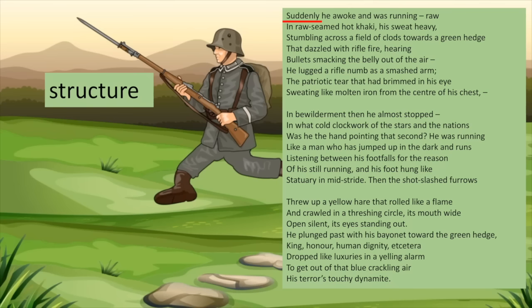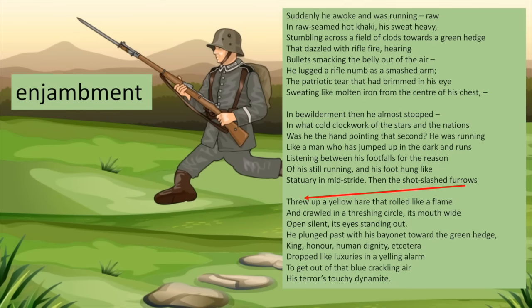Hughes employs enjambment to portray the chaos of war. Enjambment is the continuation of a sentence beyond the end of a line. We see this throughout the poem, even between stanzas — for example: 'then the shot slashed furrows through up a yellow hare.' The enjambment creates a disjointed, disordered effect on the reader. Just like the soldier, the reader struggles to make sense of the chaos.